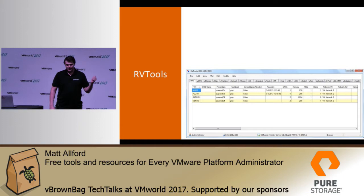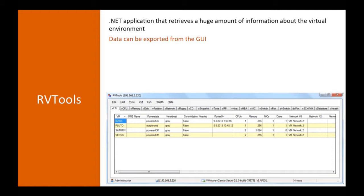First one is RVTools. It's a pretty popular one. It's a .NET application and you connect to an ESXi host or a vCenter environment and it retrieves a huge amount of information from the environment and pulls that into tabs in a GUI. In the tabs you can see it pulls out snapshots, host information, VM information, storage — everything about your environment pretty much pulled out there.